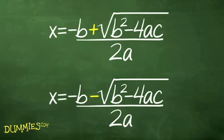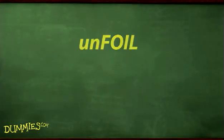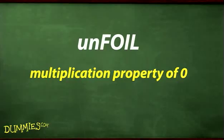Sometimes it's easier to use the formula if the equation has really large or nasty numbers. In general, though, it's faster to factor using unfoil and then the multiplication property of 0 when you can.